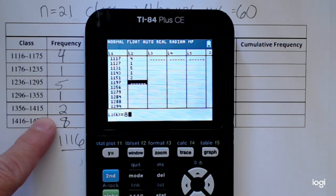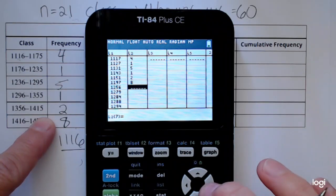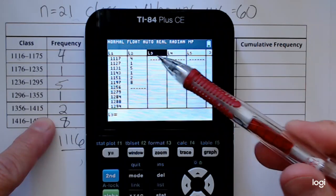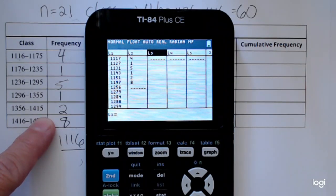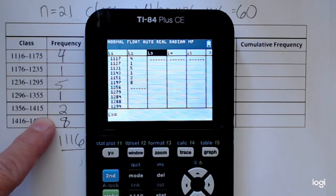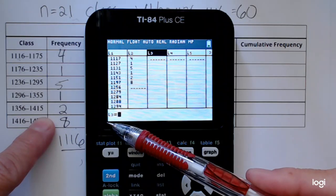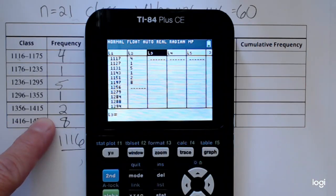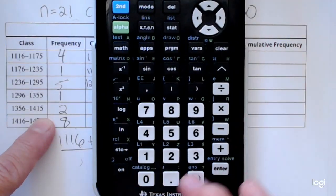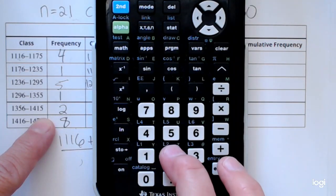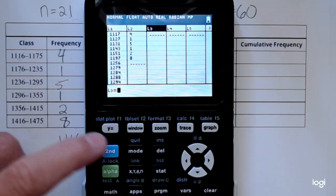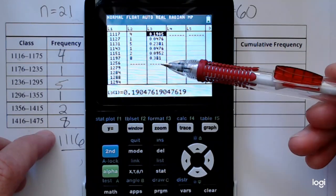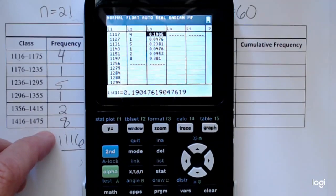In my second list, I'm going to put the frequencies, and then I'm going to have the calculator do that division for me. I'm going to right arrow over to list three so that list three is highlighted, press enter. It moves your cursor to the bottom of the screen. I'm going to tell it for all the values in list three, what I want you to do is take the values in list two and divide it by 21.